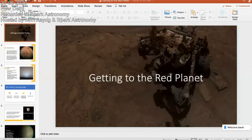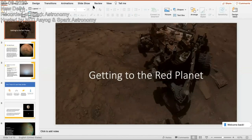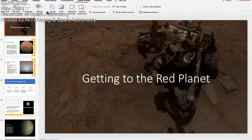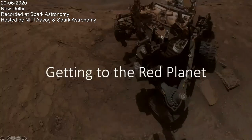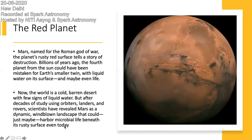When we talk about getting to the red planet, Mars is the fourth closest planet to the Sun and it is next to the Earth. After Earth, Mars comes up. So the red planet — why do we call it the red planet? Because it is red in colour, of course. Mars was named after the Roman god of war.